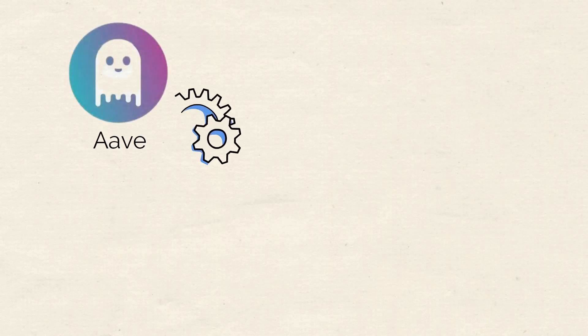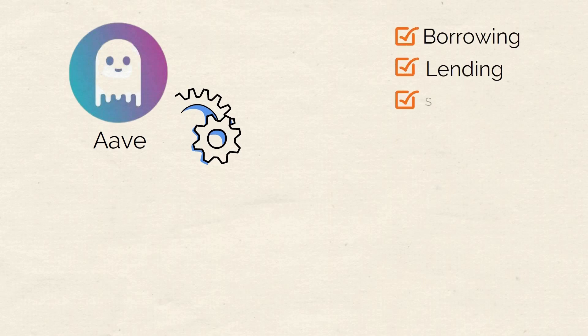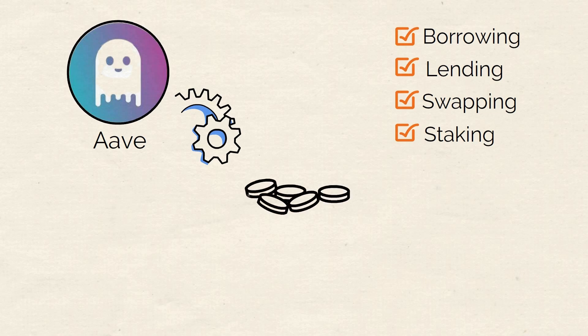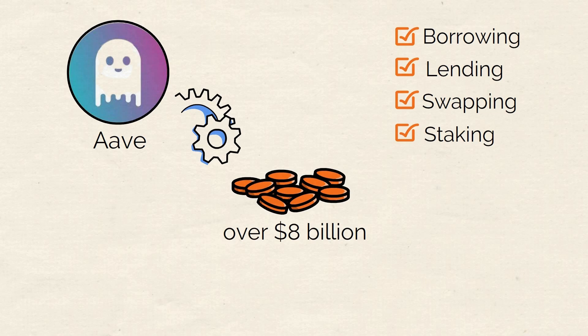Aave is an exciting crypto version of a bank. It gives you all the financial tools that you could expect to have, whether it's borrowing, lending, swapping, staking, or more — Aave has them all covered. It's efficient and has grown to become very popular, with over $8 billion in total value locked.